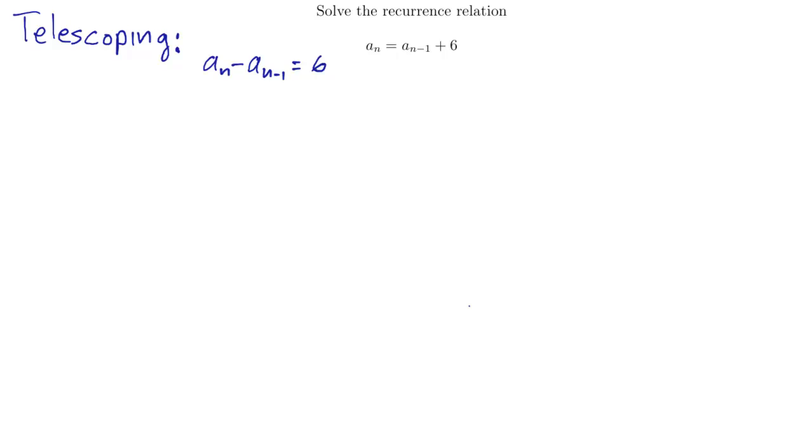Now I'm just going to write this same recurrence relation down many times with different values for n. So the first value that makes sense for n is when n is 1.